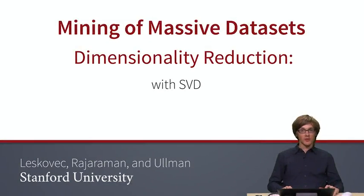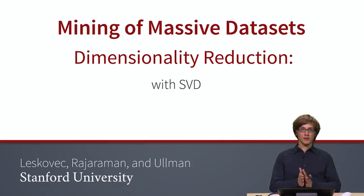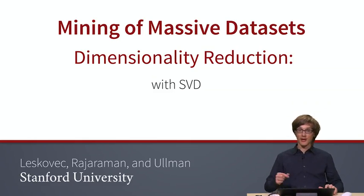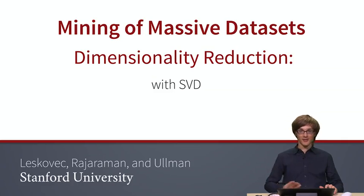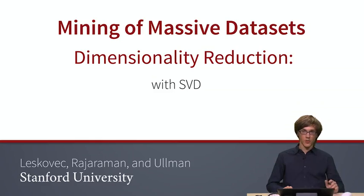So far, we saw our singular value decomposition on this small users-to-movies example, where we took this original matrix and were able to represent it as a product of three matrices. We talked about the sci-fi concept, the romance concept, and then there was a third column with very low strength — the third concept that had very small strength that we kind of brushed under the rug and didn't really talk about.